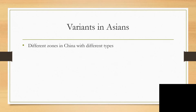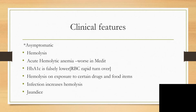There is also variance within nations — different zones in China will have different types. Regarding clinical features of G6PD deficiency: it might be asymptomatic, so patients are detected accidentally, or when another family member is diagnosed and the rest of the family agrees to be screened.